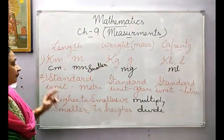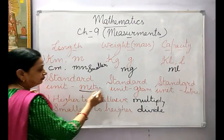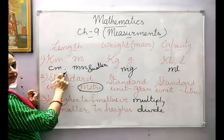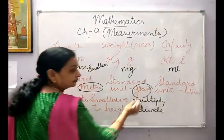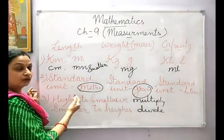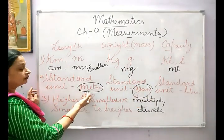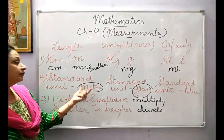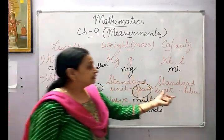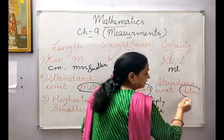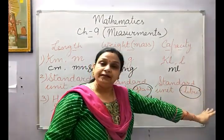The standard unit of length is metre, because all other units are related to this metre only. Similarly, the standard unit of weight is gram. The higher unit will be kilogram and the smaller unit will be milligram. Similarly, the higher unit of metre will be kilometre and the smaller units will be centimetre and millimetre. For capacity, the standard unit is litre. The higher unit will be kilolitre and the smaller will be millilitre.